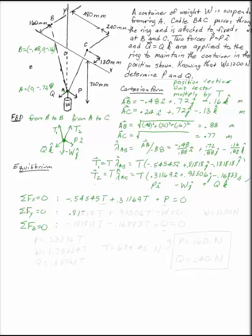And then for the j's, I'm going to get 0.81818T, plus 0.93506T, same T, minus W equals 0.